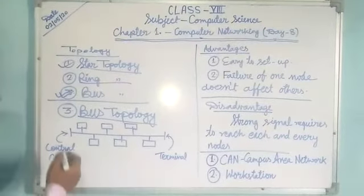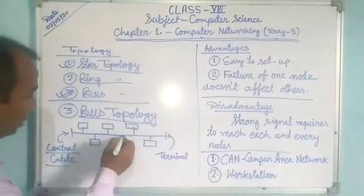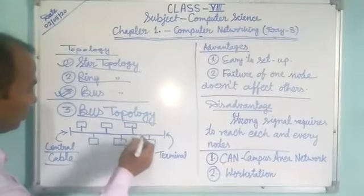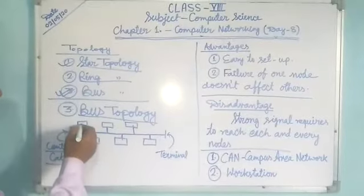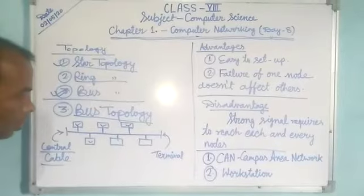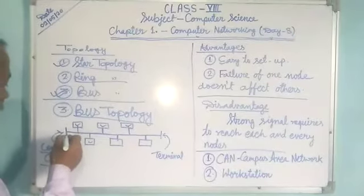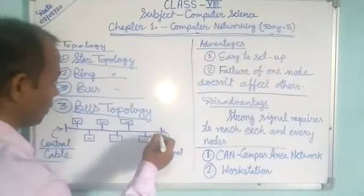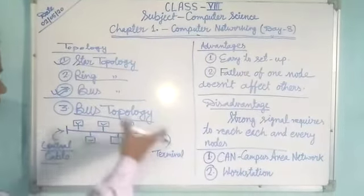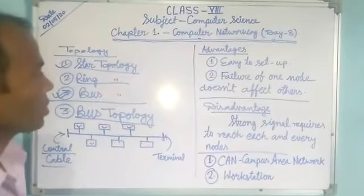Bus Topology has a central cable. In the middle lines, this central cable is here and the nodes are connected through the central cable. Each end has terminals. The data is passing from the central cable. Such type of network we can call Bus Topology.